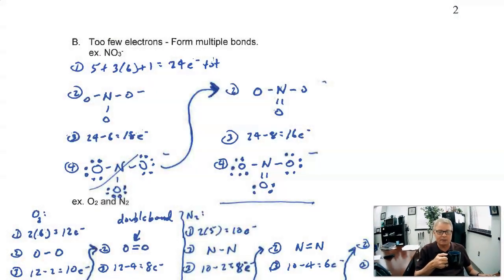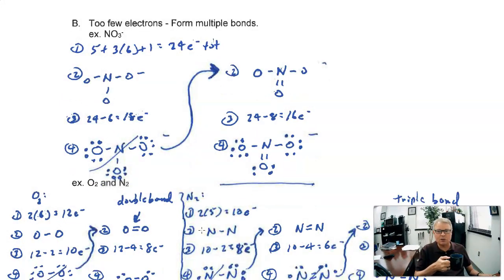Let's continue and talk about Lewis dot structures a little bit more. We talked about what to do if you have just enough electrons to go around. So what do you do if you don't have enough electrons, and what do you do if you have too many? The answer is pretty simple. By the time we get through with this, you should be able to draw any Lewis dot structure. Let's take a look at the too few electrons case first.